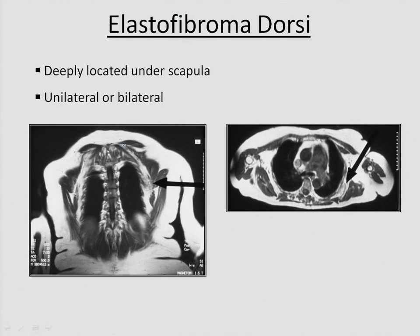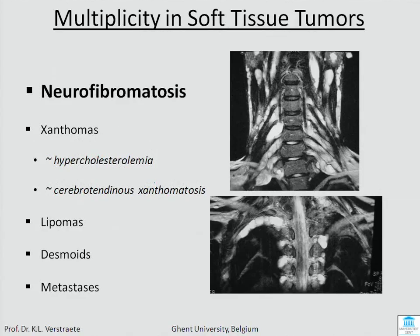A lesion located deep to the scapula is typically elastofibroma dorsi. It consists of elastic fibrous tissue and is a classic soft tissue lesion in that location — it can even be symmetrical, occurring on both sides. Multiplicity can also help: in neurofibromatosis, you will see many worm-like lesions occurring along the nerves, making the diagnosis easy.